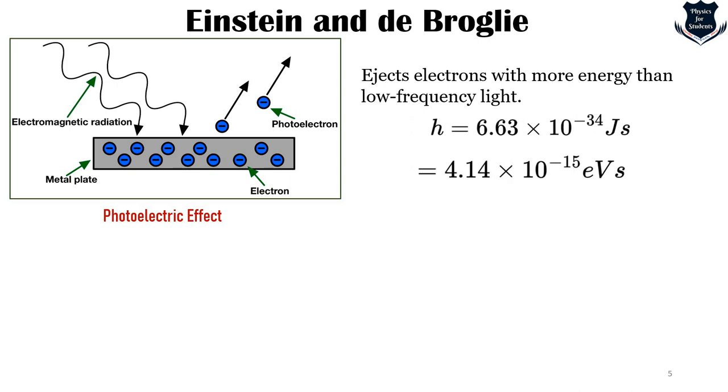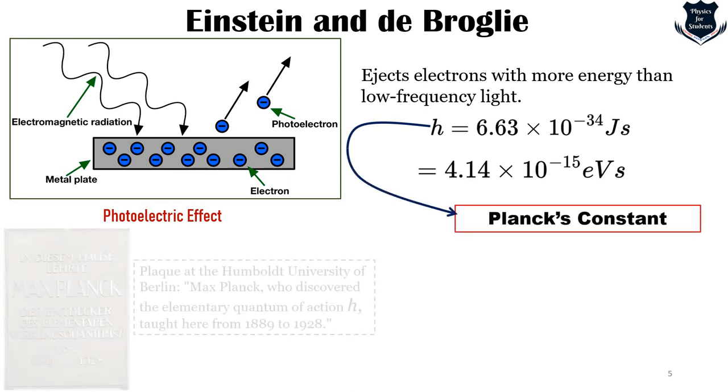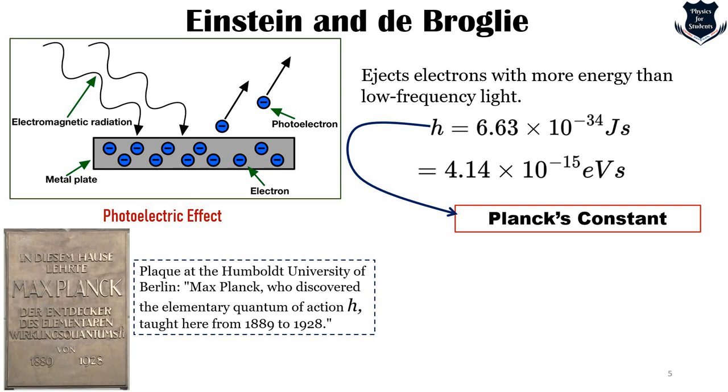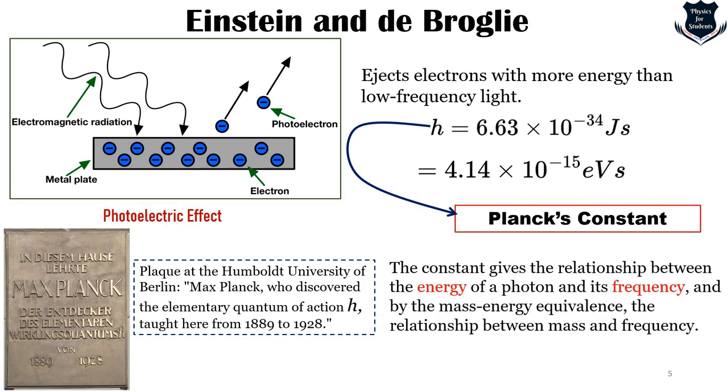When we plot the energy versus the frequency into a straight line, whose slope is constant to the proportionality, we get the Planck's constant. It is so famous that it is written on a plate in German language which tells us that Max Planck, who discovered the elementary quantum action H, taught here from 1889 to 1928. The energy gives the relationship between the energy of a photon and its frequency, and with the mass-energy equivalence, the relationship between mass and frequency.